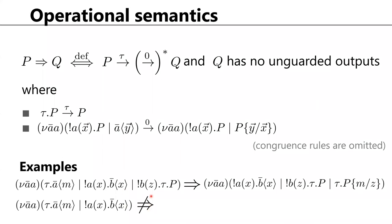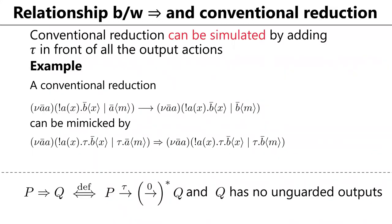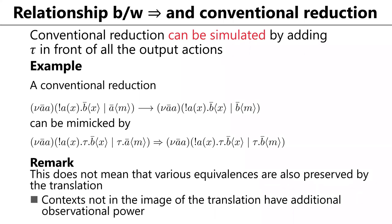One might think the new reduction semantics is somewhat extraordinary, but actually we can simulate conventional reduction by adding tau in front of all output actions. In that case, after one step of tau reduction, only one output gets unguarded, and after the communication using that output happens, all outputs are guarded. One quick remark: this only means the translation preserves reduction, not that it also preserves various equivalences that take outer context into account, since contexts not in the image of the translation have additional observational power.